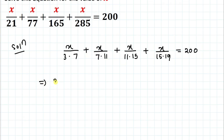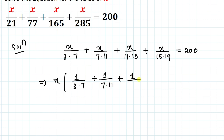Now I will take x common, so we have x multiplied with 1/(3×7) + 1/(7×11) + 1/(11×15) + 1/(15×19) equals 200.